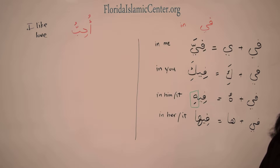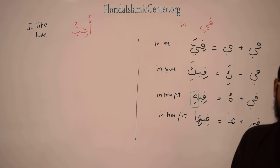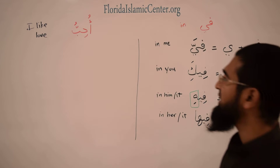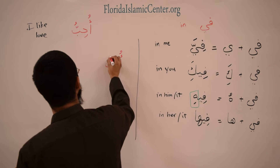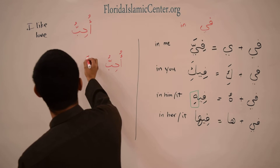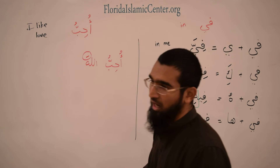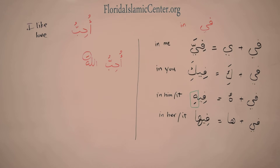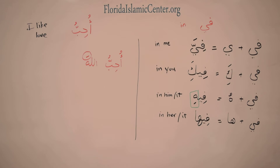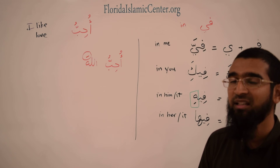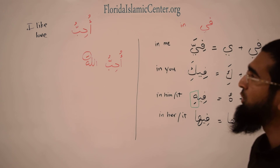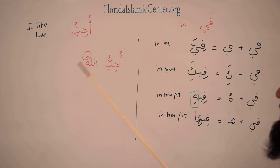If you want to say 'I love Allah سبحانه وتعالى,' you say أحب الله. Similarly, you can say 'I love the Arabic language' — أحب اللغة العربية — and so on. We'll learn more about verbs in a separate chapter, in sha Allah تعالى.